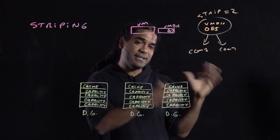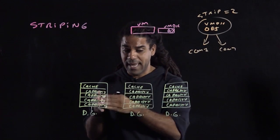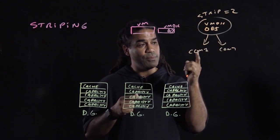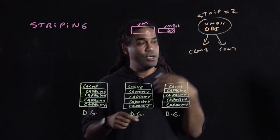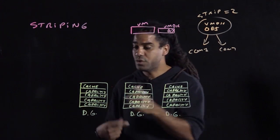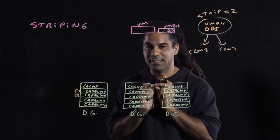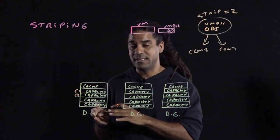So next vSAN is going to go and ask itself, okay, I need to find two capacity disks anywhere, and I'm going to put component 1 in one capacity disk, and component 2 in the second capacity disk. It could be that vSAN could choose to put component 1 here and component 2 there, as long as they are not in the same capacity disk.